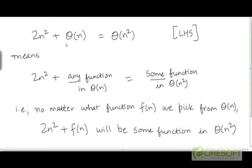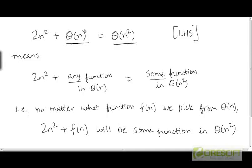Here is an example where the asymptotic notation is used as a term on both the left-hand side and the right-hand side: 2n-squared plus big-theta of n equals big-theta of n-squared. The way to read this equation is: if I take 2n-squared and add to it any function from the set theta of n, I am going to end up with a resulting function that belongs to the set theta of n-squared.